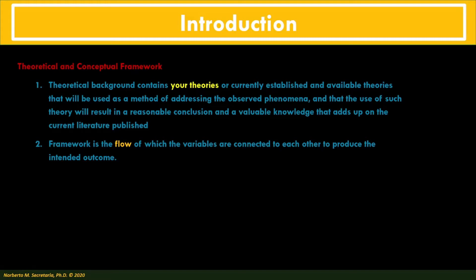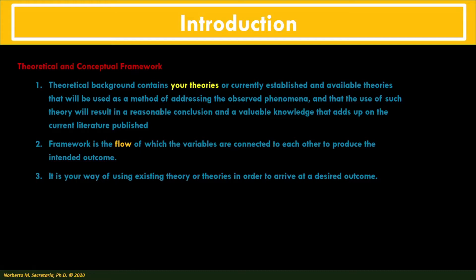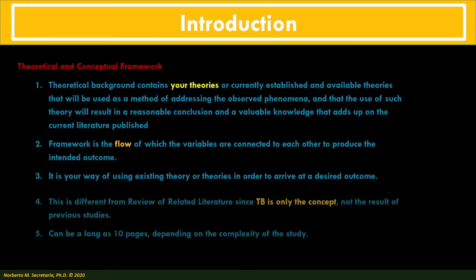A framework is simply the flow of how variables are connected to each other to produce an intended outcome. There is a certain kind of flow that results in a desired outcome — how variables are interconnected and result in a valid and sound conclusion. It is your way of using existing theories to arrive at a desired outcome. This is different from the review of related literature. The theoretical background is based on the concept and idea of how a specific study is conducted.